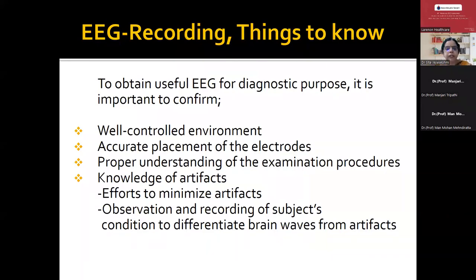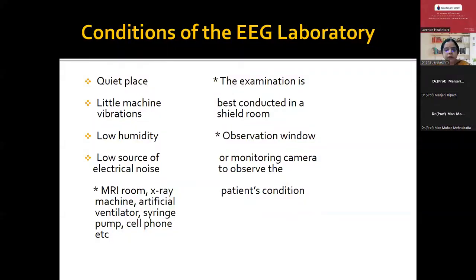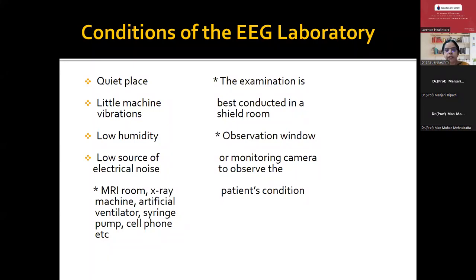Whenever recording the EEG, it should be conducted in a well-controlled environment. Avoid too much traffic in the EEG labs. There should be accurate placement of electrodes, proper understanding of the examination procedure by the patient as well as the technologist, and establishing good rapport is important. The technologist should have good knowledge of artifacts and make every effort to minimize them, with observation and recording of the subject's condition to differentiate brain waves from artifacts. The EEG recording should be done in a quiet place with little machine vibration. Humidity should be low — AC should be on — and low source of electrical noise.